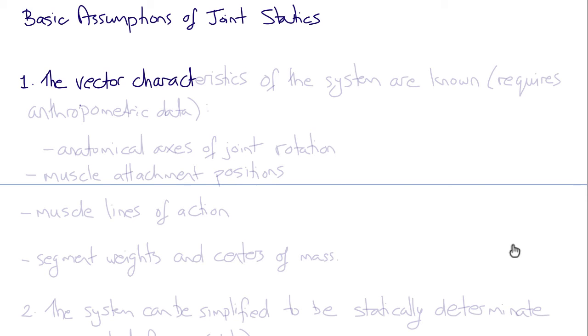So the basic assumptions of joint statics fall into two main groups. The first is that the vector characteristics of the system are known, so that we can draw the free body diagram. This requires anthropometric data, measurements on anatomic properties.